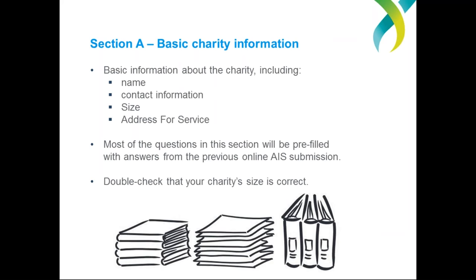Now into the form. The first thing to note: compulsory questions are marked with a red asterisk so they're easy to see. You won't be able to progress to the next page until you have answered the mandatory questions on your current page. Section A is pretty basic — we ask a few quick questions about basic charity information: charity name, contact points, details, etc. Some of the questions will have information already entered in, pre-filled from previous AIS submissions. If the pre-filled information is incorrect or out of date, you can of course change it.